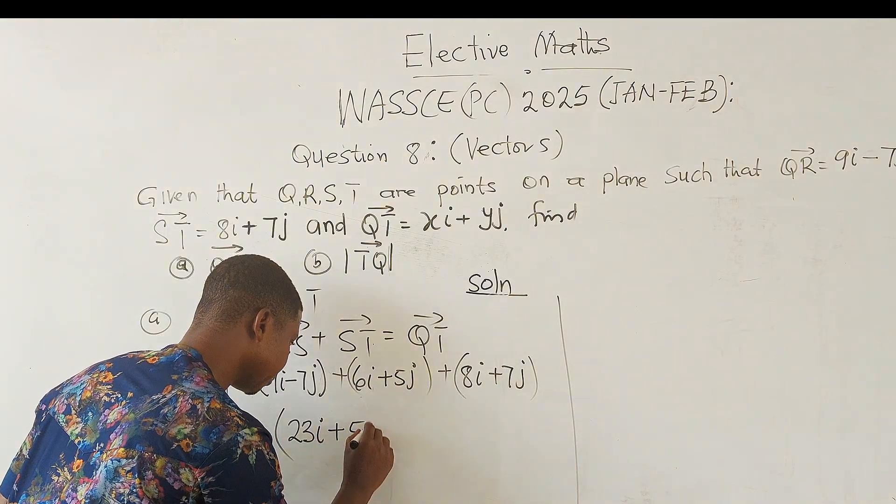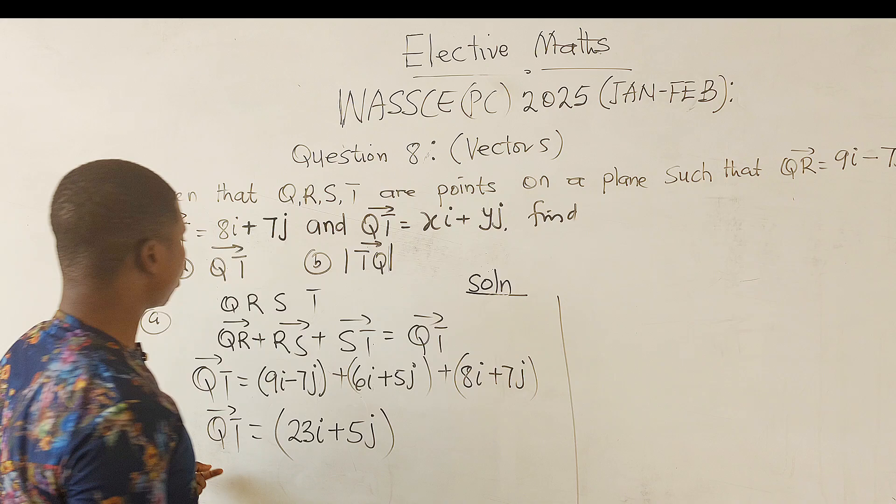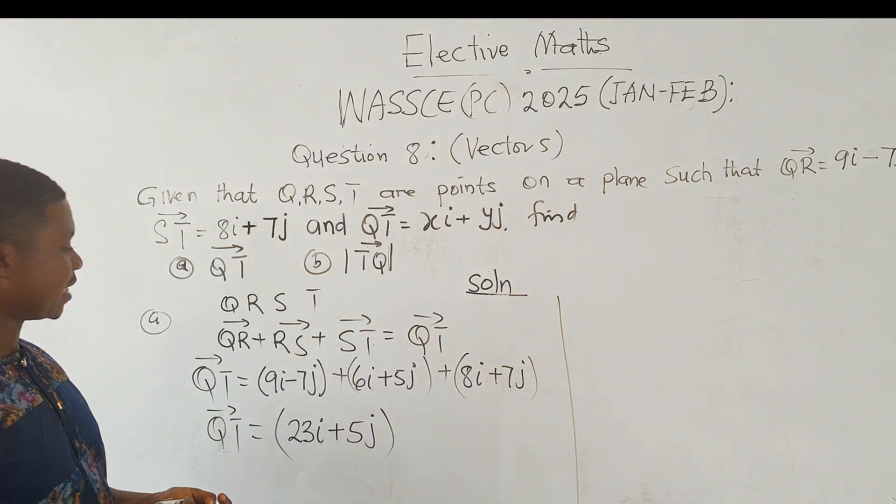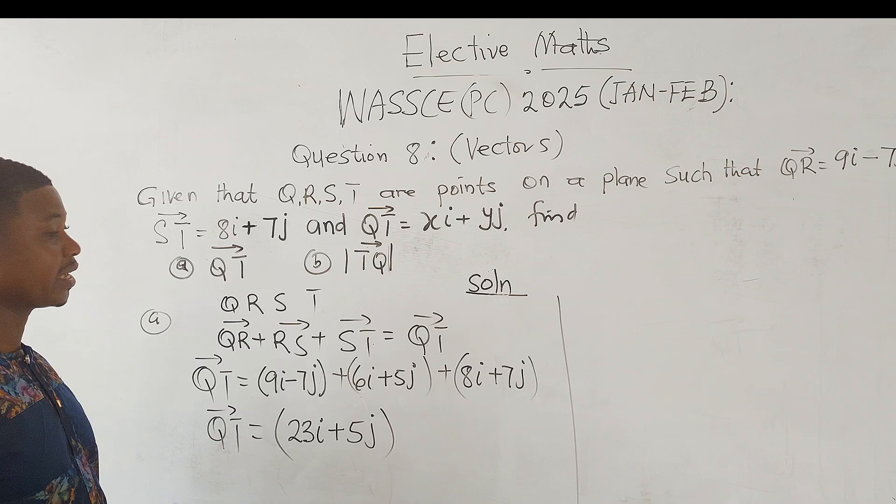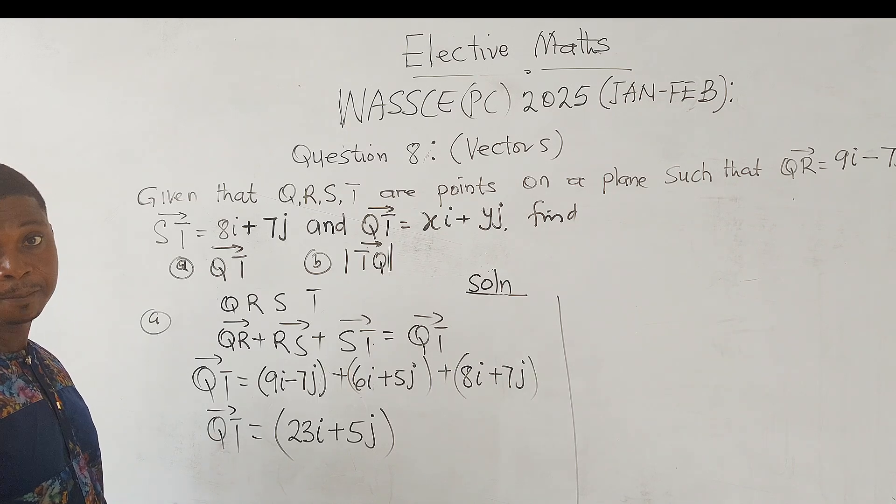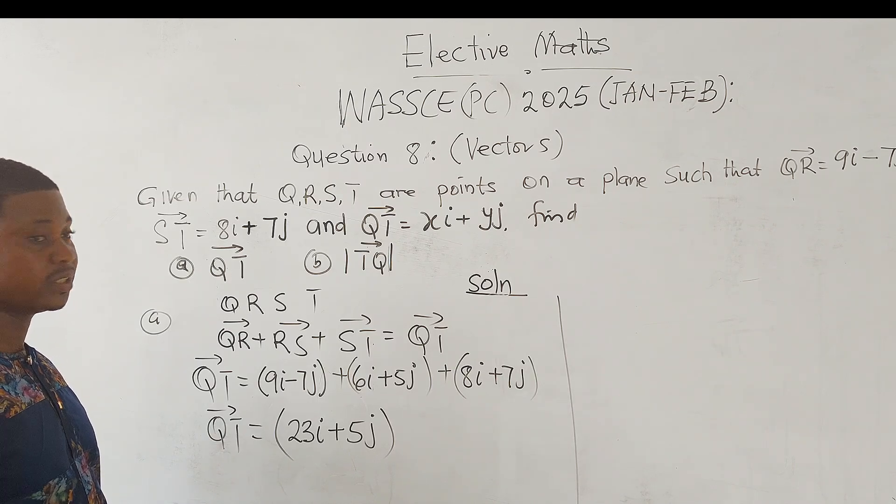So plus 5j. So this gives us the solution to the first part. So the first part, QT is equal to 23i + 5j.